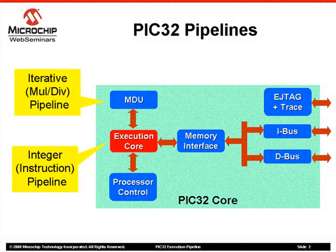PIC32 Core consists of two pipelines: an Integer Pipeline in the Execution Core and an Iterative Pipeline in the Multiply Divide Unit. The Integer Pipeline is a 5-stage pipeline to execute CPU instructions, while the Iterative Pipeline is a multi-stage iterative pipeline to perform Multiply and Divide operations. In this presentation, I will focus on Integer Pipeline only.